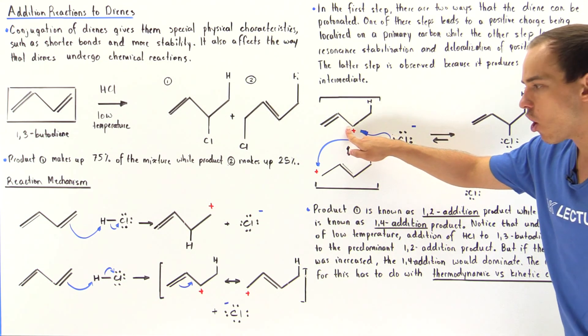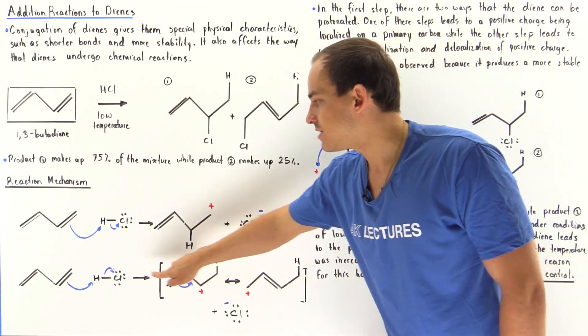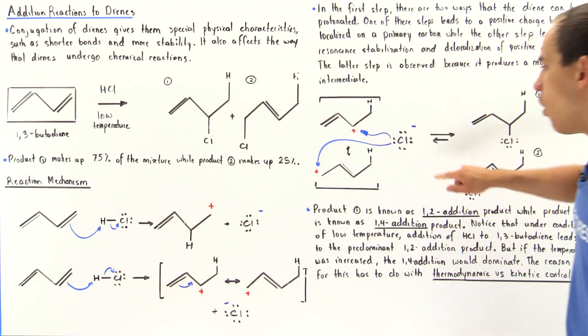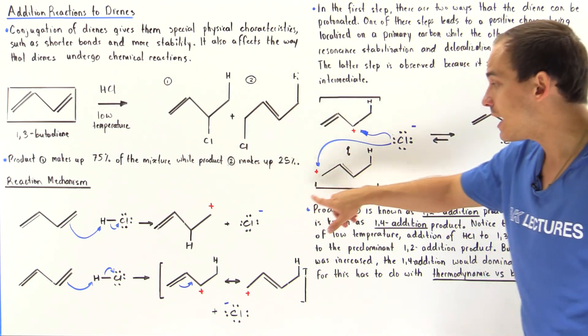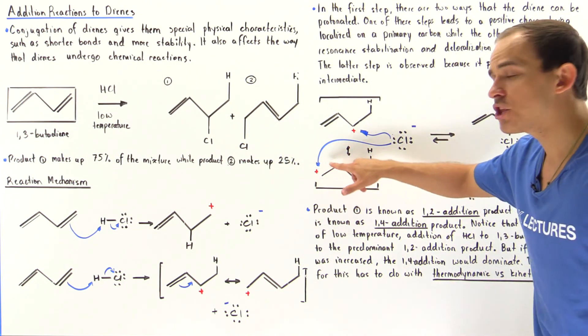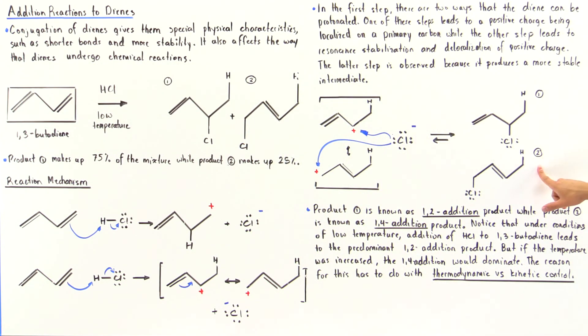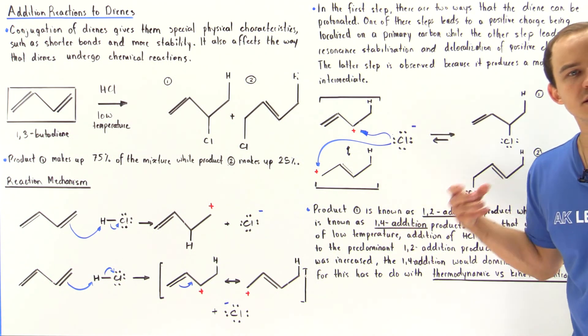This is also known as the 1-2 addition product, because our chloride goes onto the second carbon and this H goes onto the first carbon. Or the lone pair of electrons can attack the end carbon, the primary carbon, the fourth carbon, forming the second product. This is known as the 1-4 addition product.